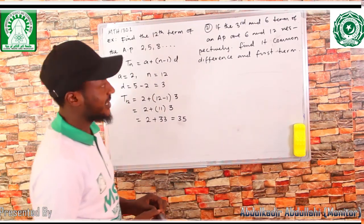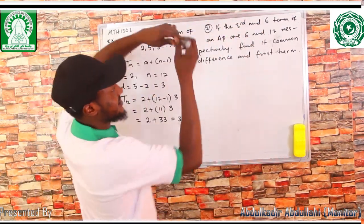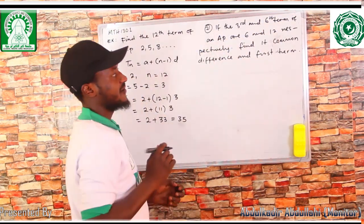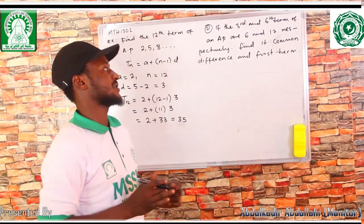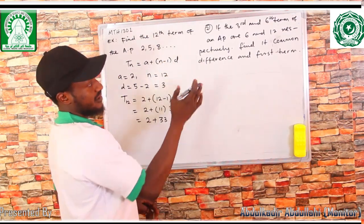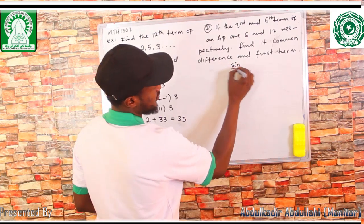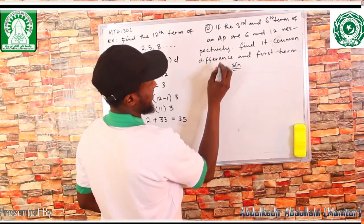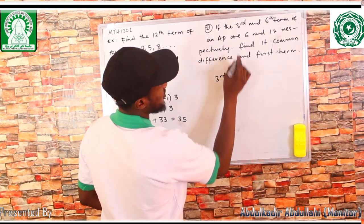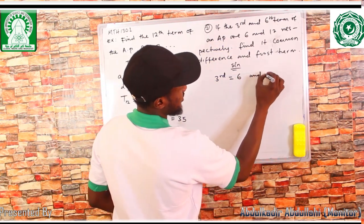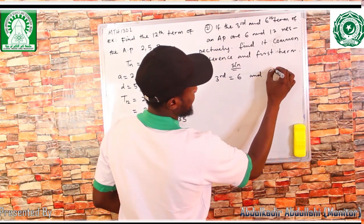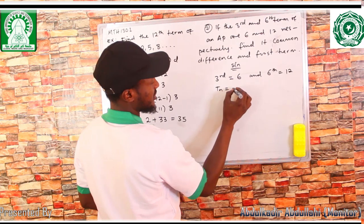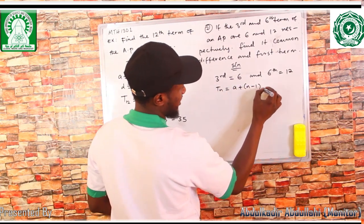The next example says: if the third and sixth terms of an AP are six and twelve respectively, find its common difference and first term. We will use the formula T_N = A + (N - 1)D.